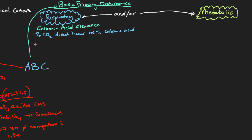As we increase ventilation through the lungs — as we increase minute ventilation — we increase clearance of CO2 and therefore clearance of acid. Ventilation of the lungs clears carbonic acid. If you increase ventilation, you increase CO2 clearance and therefore increase acid clearance. If you decrease ventilation, CO2 starts to accumulate and therefore acid accumulates. Ventilation will be a major factor in how ABGs look and how we treat them.